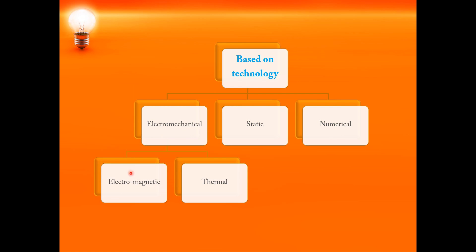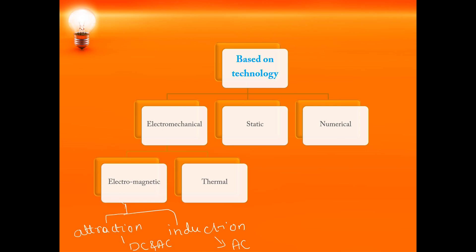Electromechanical relays are further classified into electromagnetic and thermal. Electromagnetic relays can work based on the electromagnetic attraction principle or electromagnetic induction principle. If it is electromagnetic attraction type, it has moving parts and is constructed with electrical, mechanical, and magnetic components. It can be operated with both DC as well as AC. Whereas in induction type electromagnetic relays, the supply can only be AC. Thermal relays utilize the electrothermal effect of current, that is the heating effect.